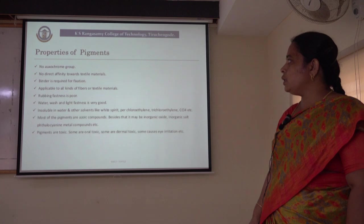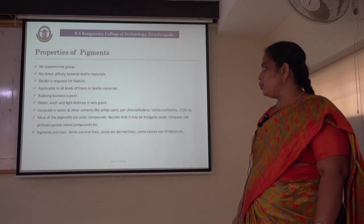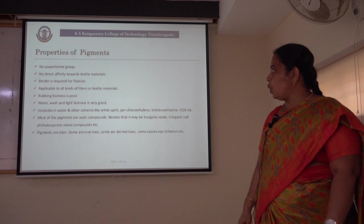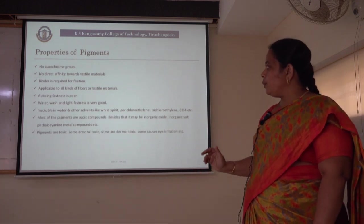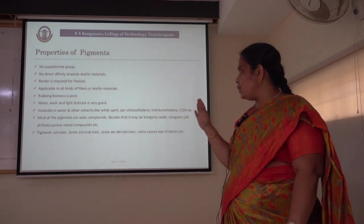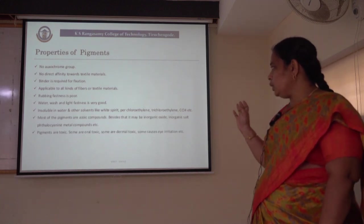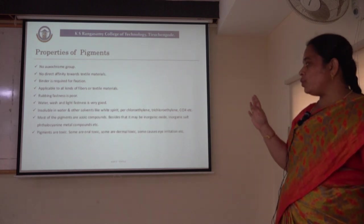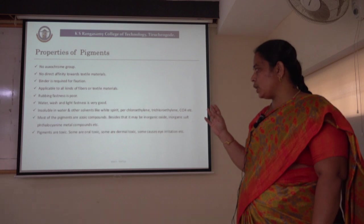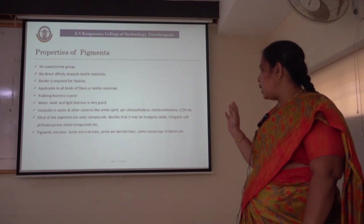Coming to the properties of pigments — these pigments will not have any chromophoric group or auxochromic group. They have no direct affinity towards the textile material, and a binder is required for the fixation process. They are applicable to all kinds of fabrics. Because of the usage of binder, the rubbing fastness is poor in pigments, whereas washing fastness and light fastness are very good. Pigments are insoluble in water and solvents such as perchloroethylene, trichloroethylene, carbon tetrachloride, etc. Most pigments are azo-based compounds; besides that, they may be inorganic oxides, inorganic salts or phthalocyanine metal compounds. Most pigments are toxic — some are orally toxic, some are dermally toxic, and some cause eye irritation.